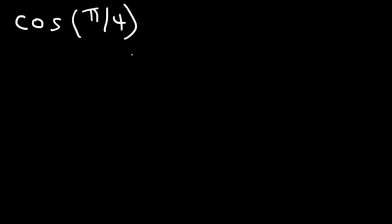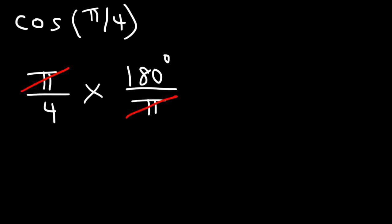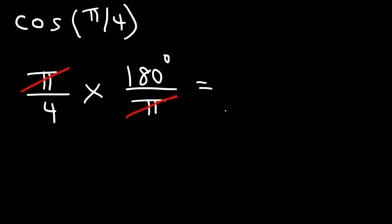Now let's evaluate cosine of π/4. First, convert radians to degrees by multiplying by 180/π. The π cancels, and 180 divided by 4 is 45. So cosine π/4 is the same as cosine of 45°.